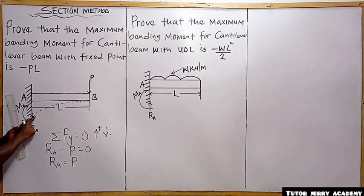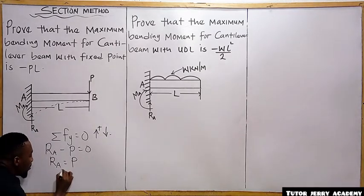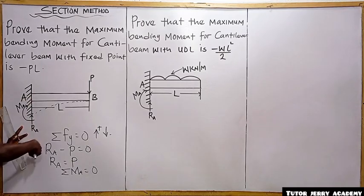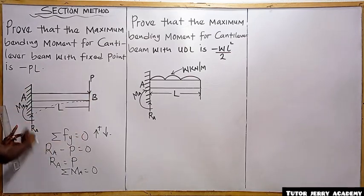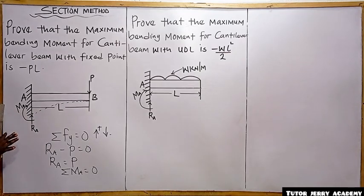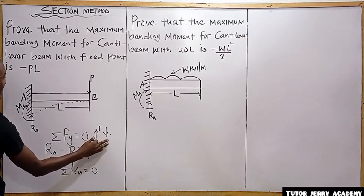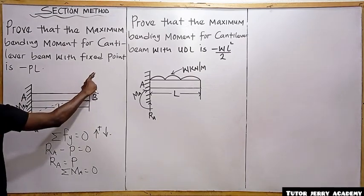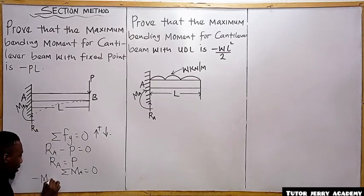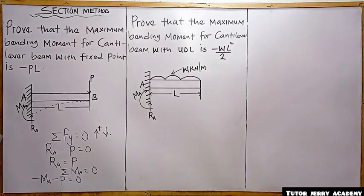So the sum of moments about point A equals zero. We have a clockwise moment, and this downward force also gives us a clockwise moment. Since we are taking downward force as negative, both moments carry the same negative sign. So we get: minus M_A minus PL equals zero.